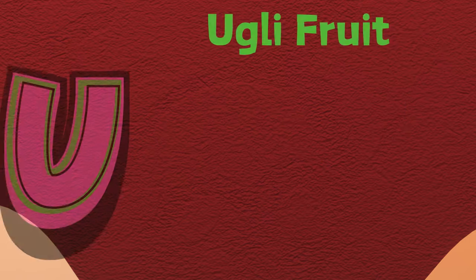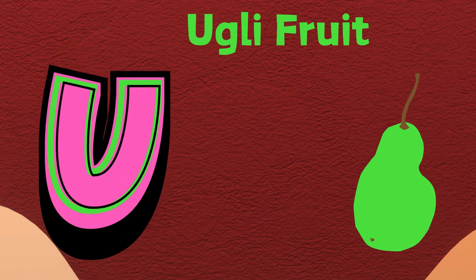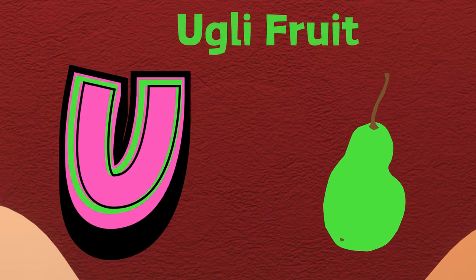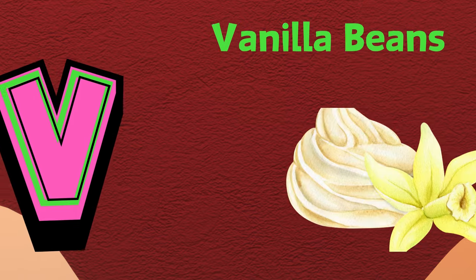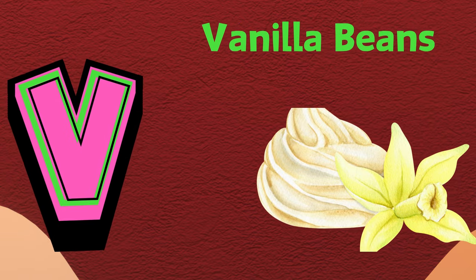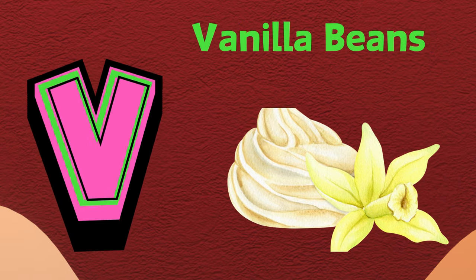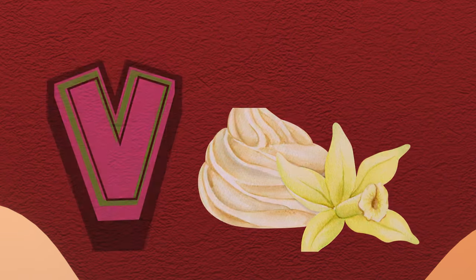U is for ugly fruit. U, ugly fruit. V is for vanilla beans. V, vanilla beans.